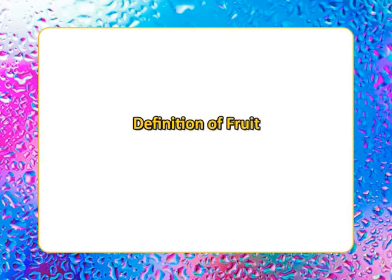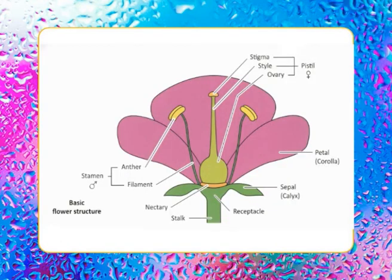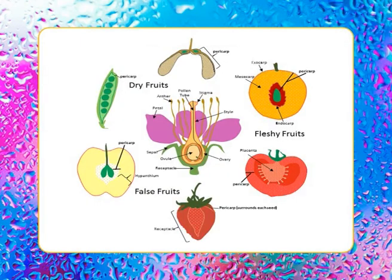Let us start with the introduction and definition of fruit. The term fruit botanically refers to the mature ovary of a plant, including its seeds, covering any other closely connected tissue. The fruit is the developed ripened ovary or ovaries of a single flower. As related to food, fruit refers to the edible part of a plant that consists of the seeds and the surrounding tissue.